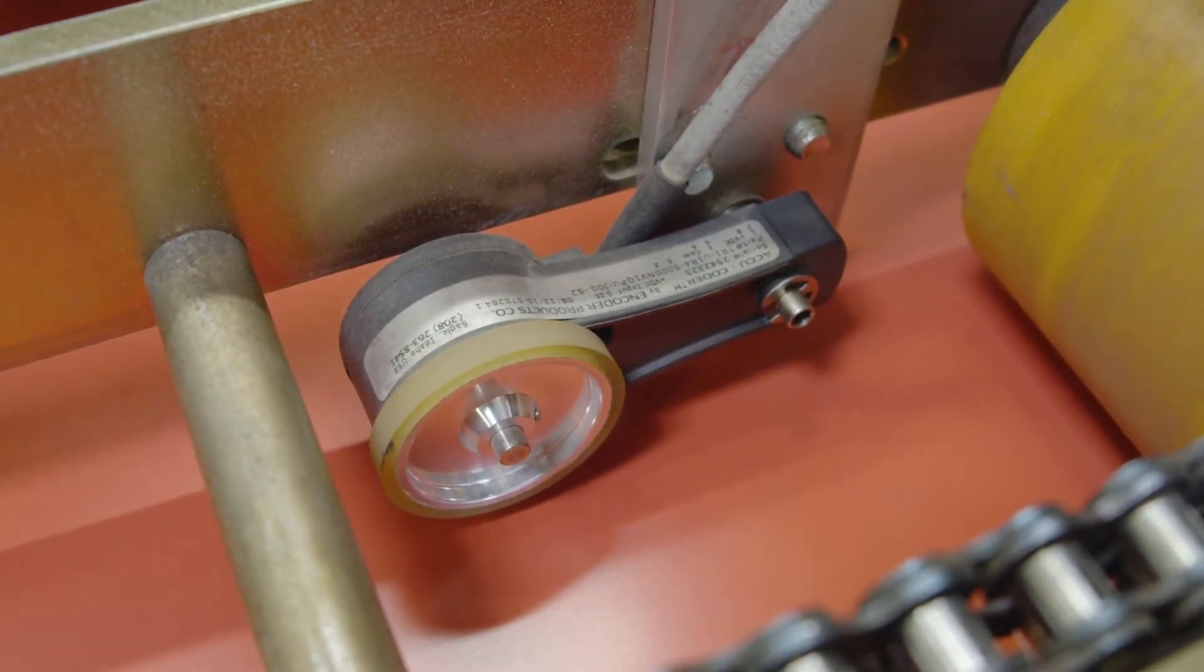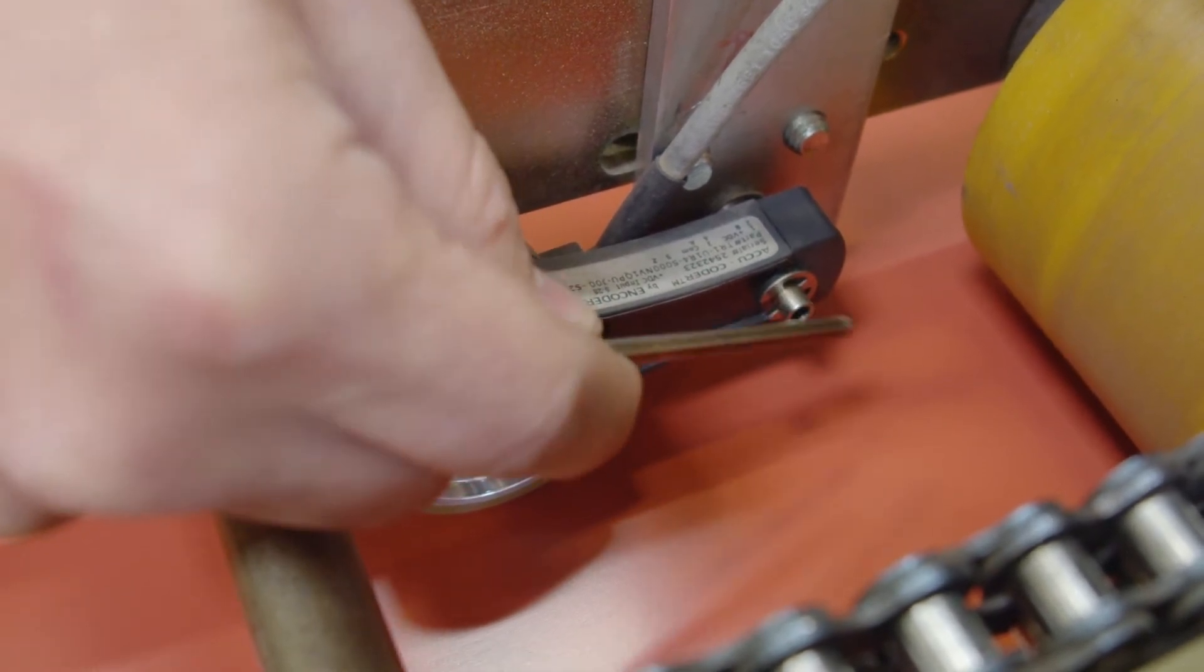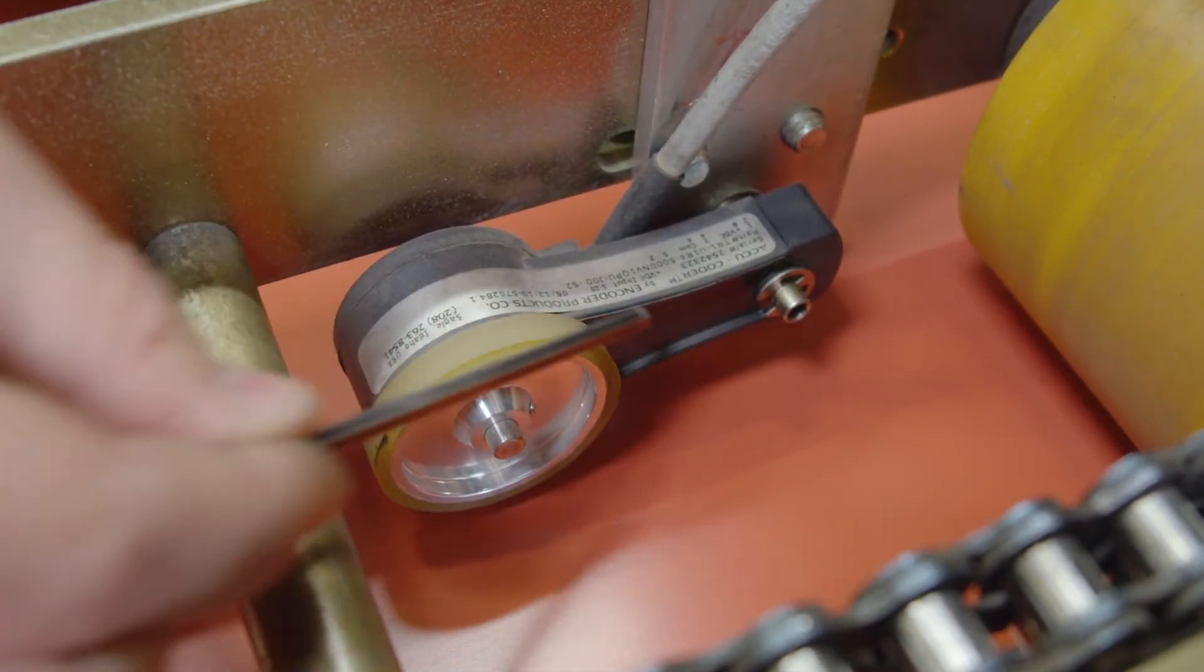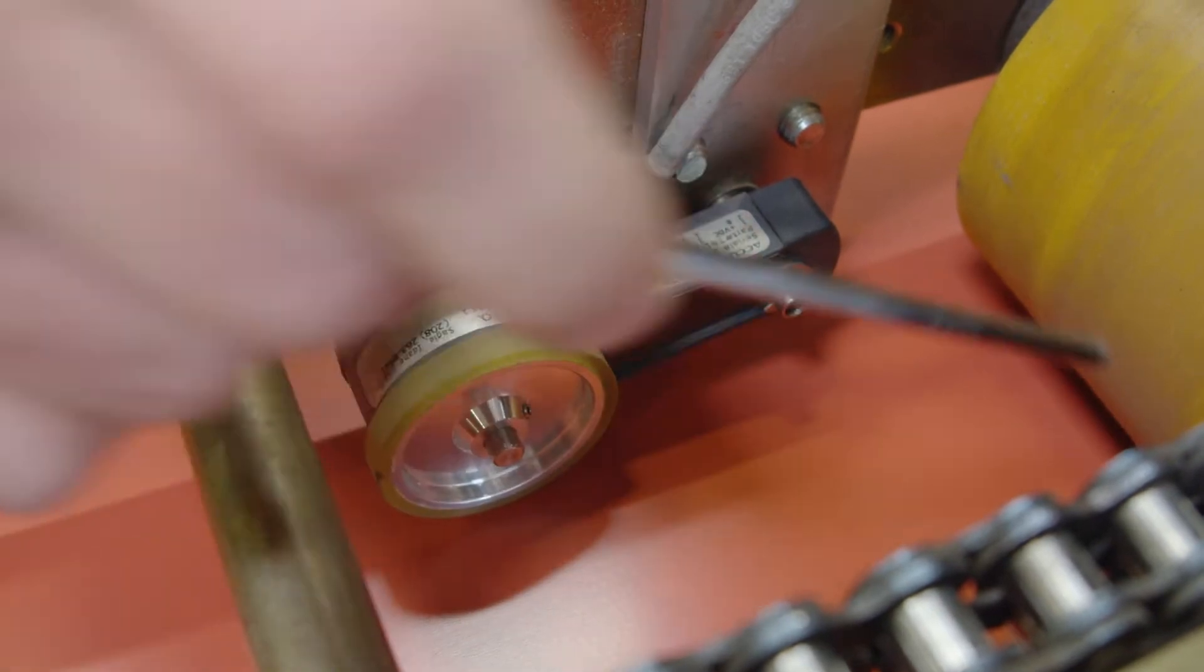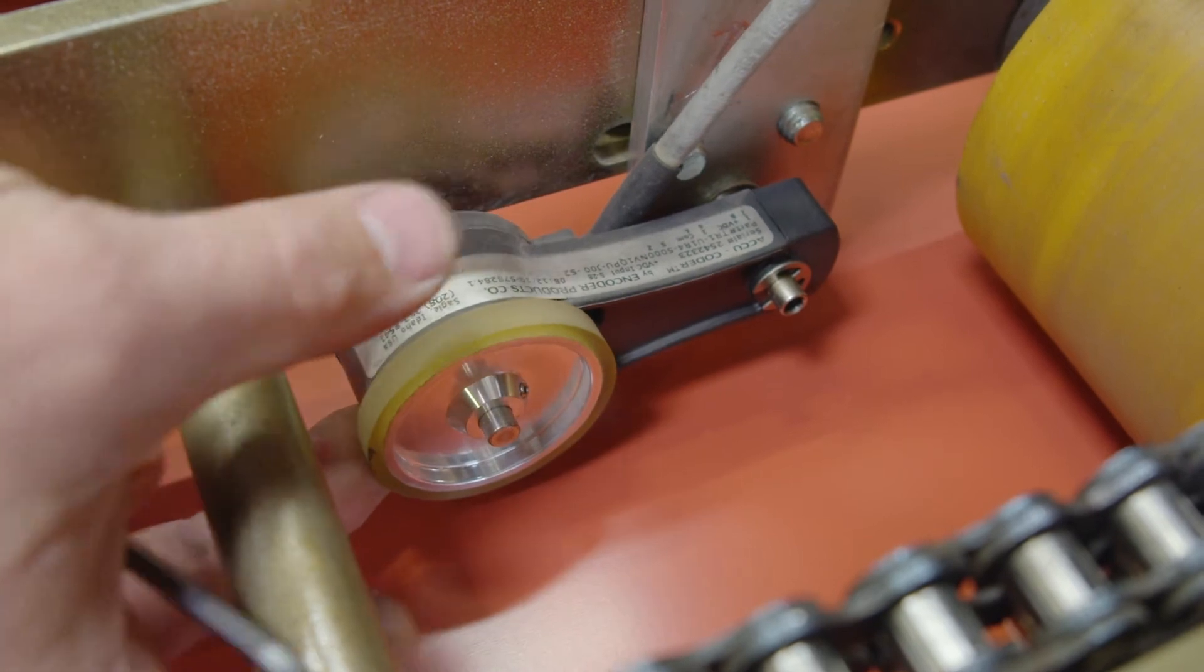First of which, we want to make sure that the through bolt, this mounting bolt here, is tight. Because even if we adjust the actual spring that's inside the encoder and our bolt is not tight, our bolt has the potential to move and it'll give you this problem again.